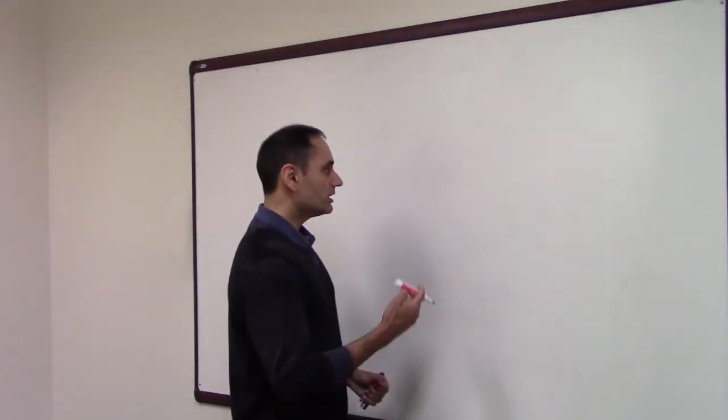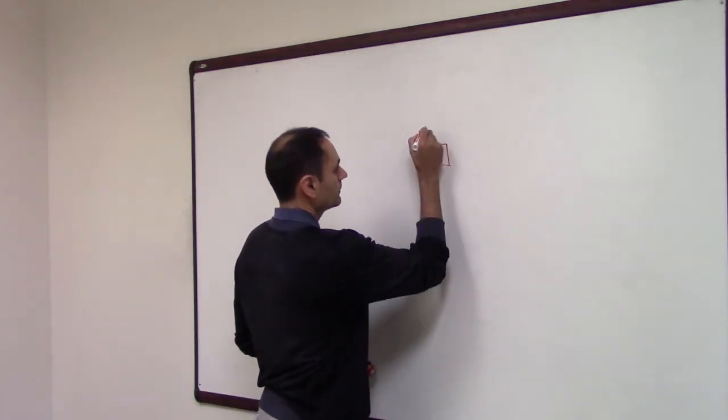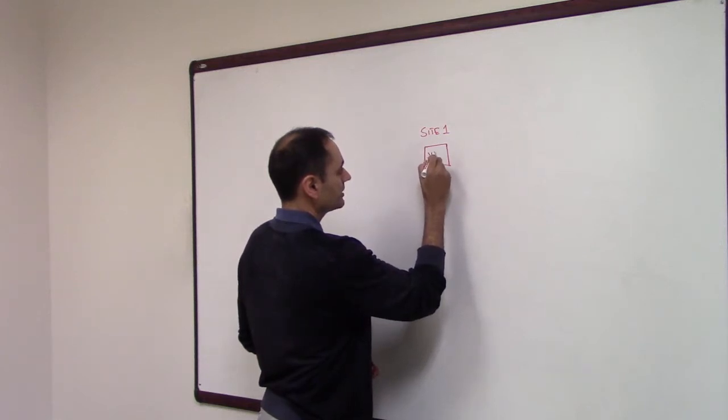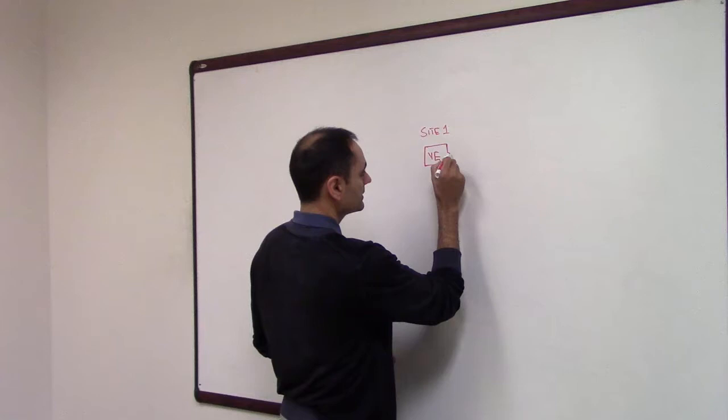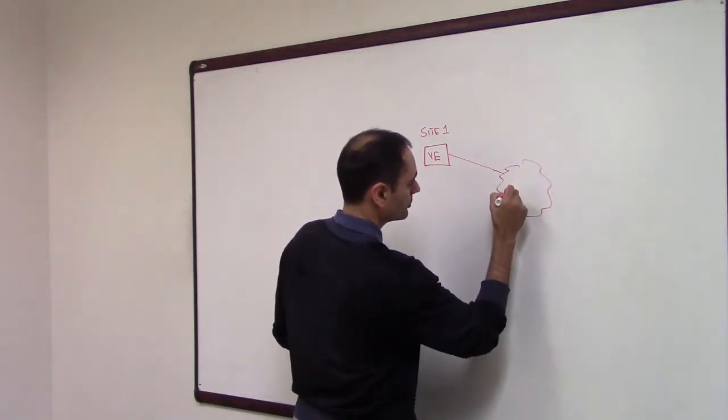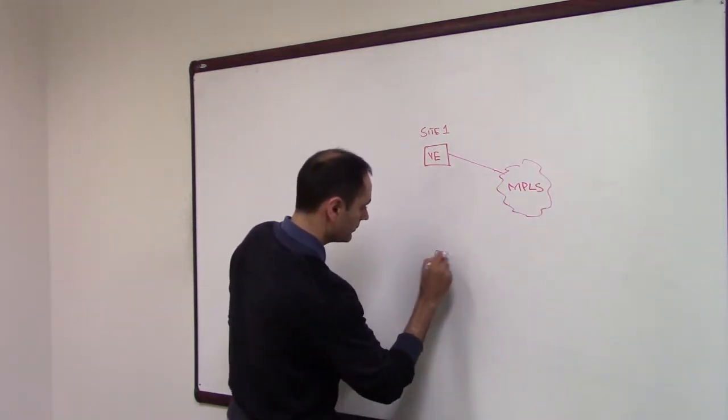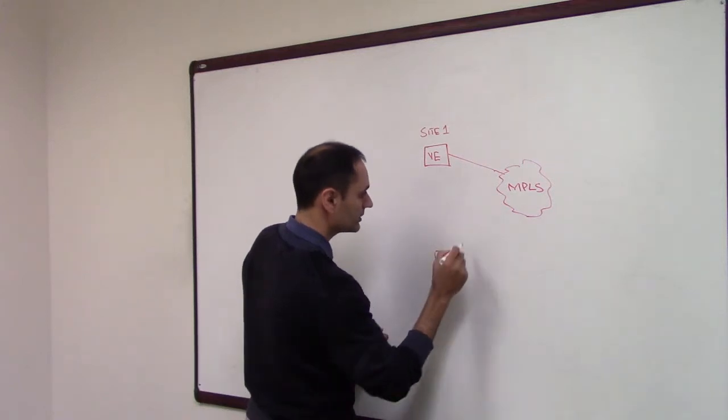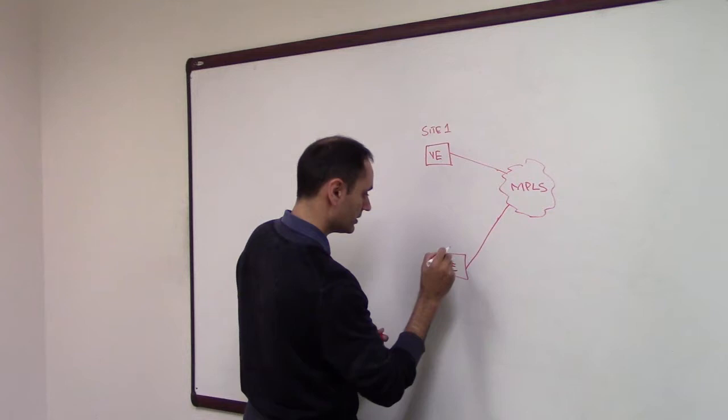Let's start with an example. We'll use Viptela's WAN-Edge router. It's connected to a transport which could be MPLS. You have another site which is also connected to the same transport. There's a V-Edge sitting there connected to this transport as well.